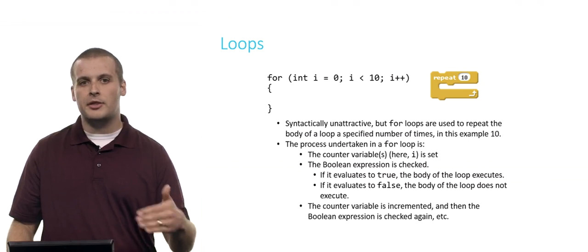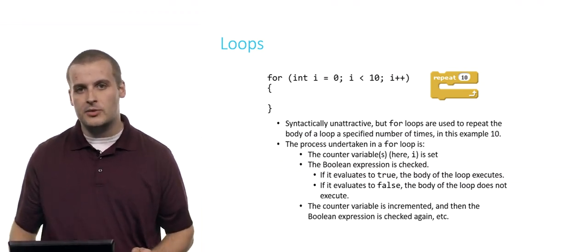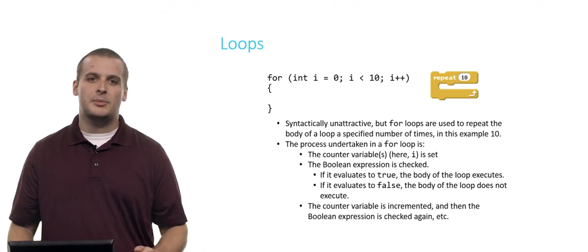Counting from zero, we've gone through 10 iterations of the loop. We've repeated 10 times, just as we did in the Scratch block. And so that's basically the process for a for loop.